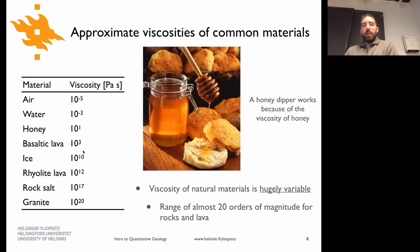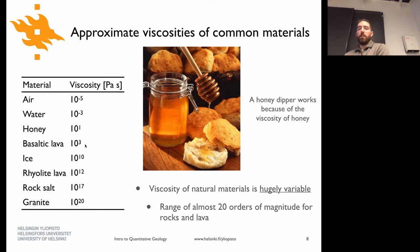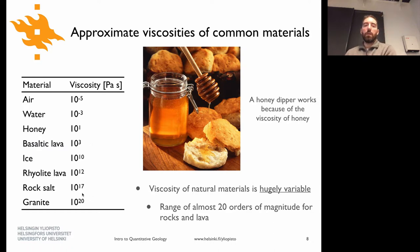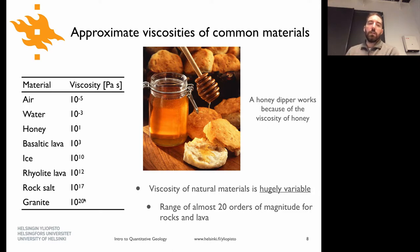Honey is about 10^1 pascal seconds — if you take a jar of honey and tip it back and forth you see it doesn't immediately flow the way water does. When you start talking about geological materials, basaltic lava is 10^3 — still not as willing to flow as honey, but much less viscous than solid rock. Granite is around 10^20 for its equivalent viscosity.